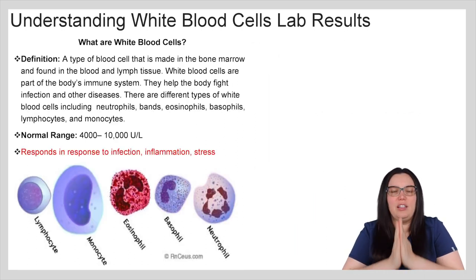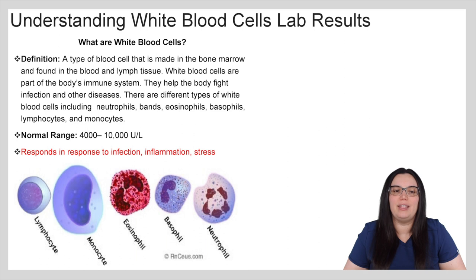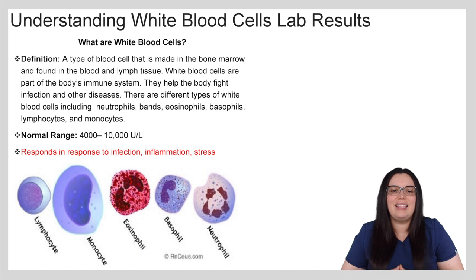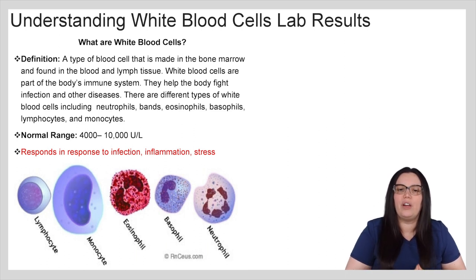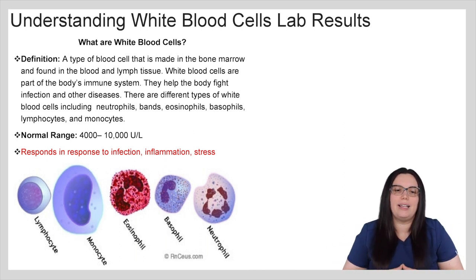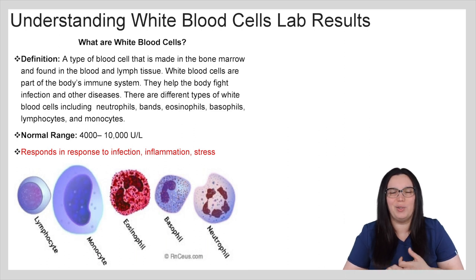In this video we're specifically looking at white blood cells. The definition is: it's a type of blood cell that is made in the bone marrow and is found in blood and lymph tissue. White blood cells are part of the body's immune system. They help the body fight infection as well as other diseases, and they are different depending on what their function is — neutrophils, bands, eosinophils, basophils, lymphocytes, and monocytes. The normal generalized range of white blood cells is between 4,000 and 10,000, and they respond to infection, inflammation, and stress found throughout the body.